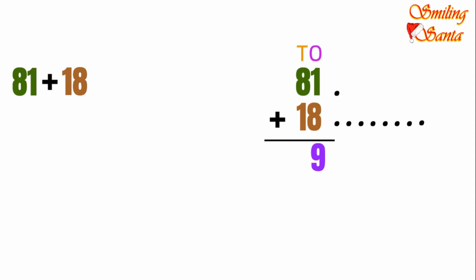Now we will add the numbers in the tens place — that is eight and one. Let's add. Put eight dots first — one, two, three, four, five, six, seven, eight. Then we will put one more dot — one. Count them together: one, two, three, four, five, six, seven, eight, nine. So nine will go into the tens place as well. 99 is the sum of this addition.